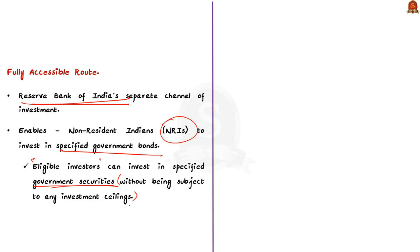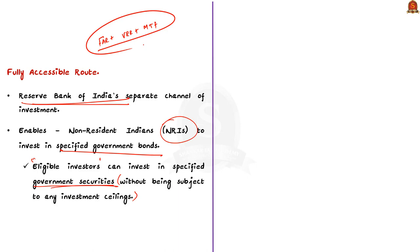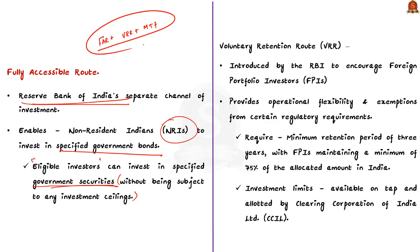The scheme will operate along with the two existing routes of FPI like Medium Term Framework and Voluntary Retention Route. This is the basic of our FAR. In our discussion now let us see some facts about Voluntary Retention Mechanism to have a clear picture of these things.